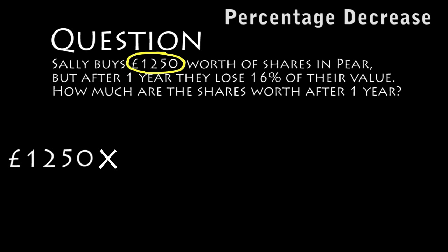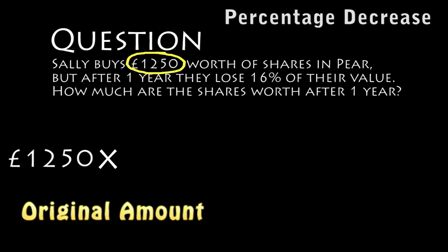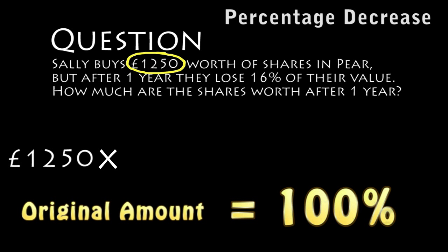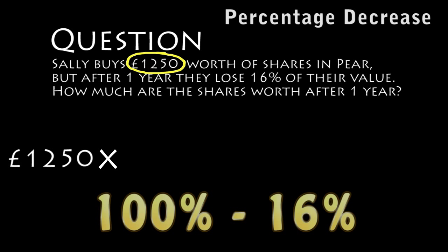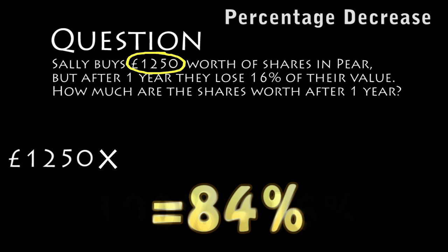Our original amount is 100%. That original amount is going to drop by 16%, because after one year the shares lose 16% of their value. So, in your head: 100% take away 16% is 84%.